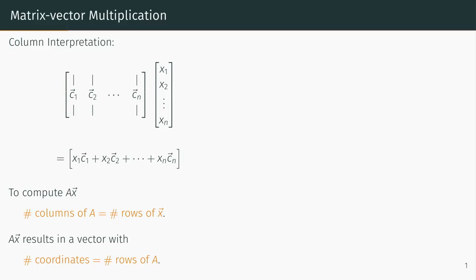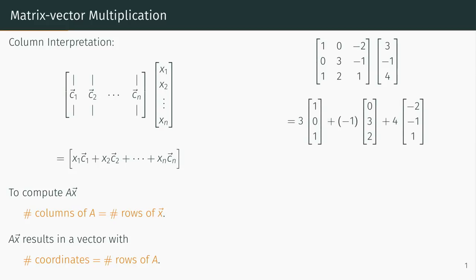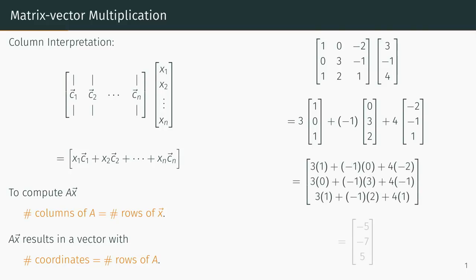Let's go through a simple example. Consider the 3×3 matrix and the 3×1 vector shown. We compute the product by taking a linear combination of the columns of the matrix with coefficients given by the entries of the vector. And after simplifying, we see the result is, again, a 3×1 vector.